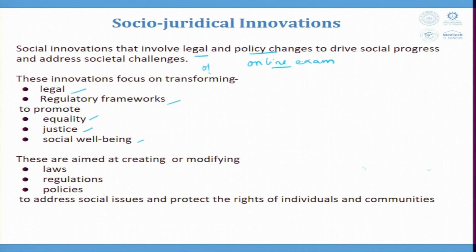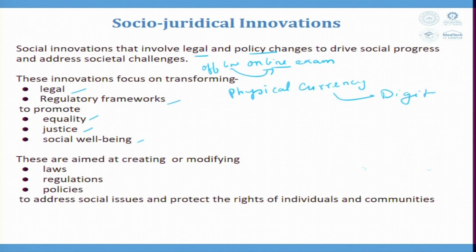A second example of policy change is banking — physical currency to digital currency. It is a sustainable solution. The energy for printing currencies is reduced. The authenticity problem of currencies is reduced, and everything is digital. It all goes into a digital wallet — easy to move, easy to commute, and it has a lot of protection. So physical currency to digital currency is a major policy change.